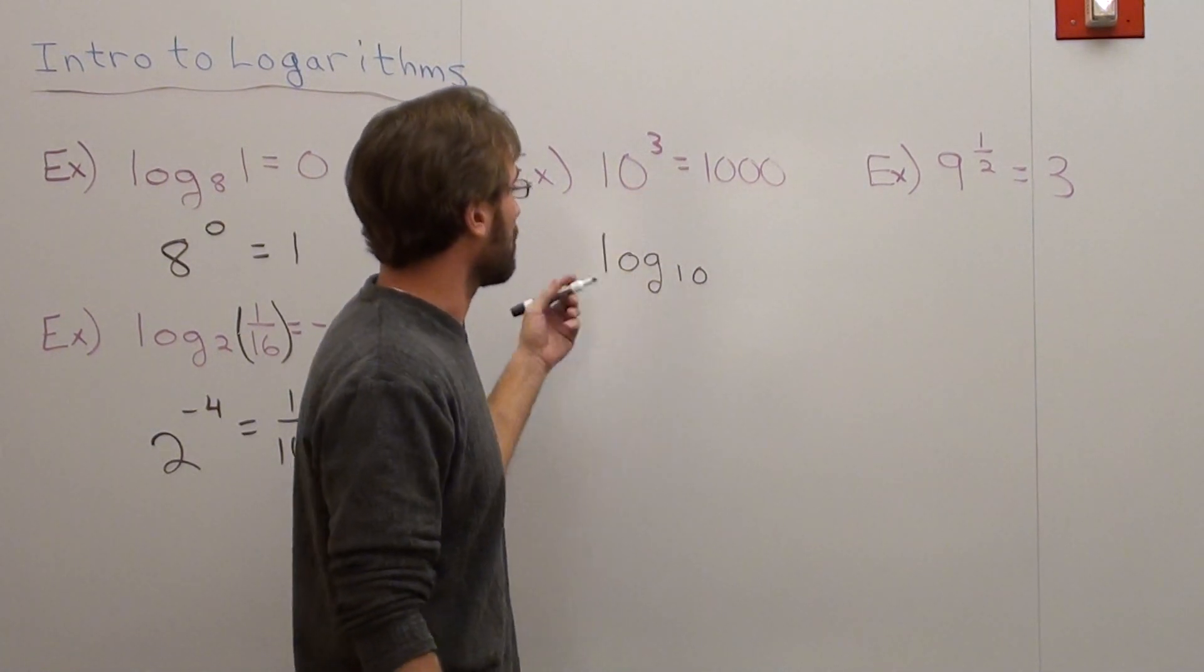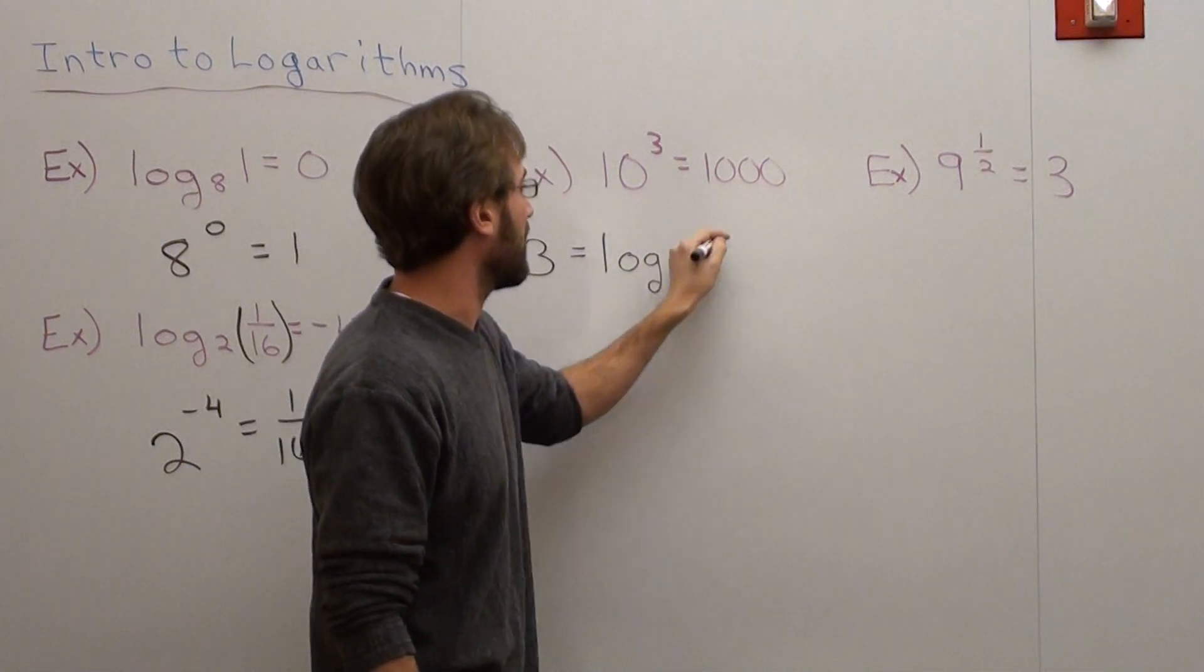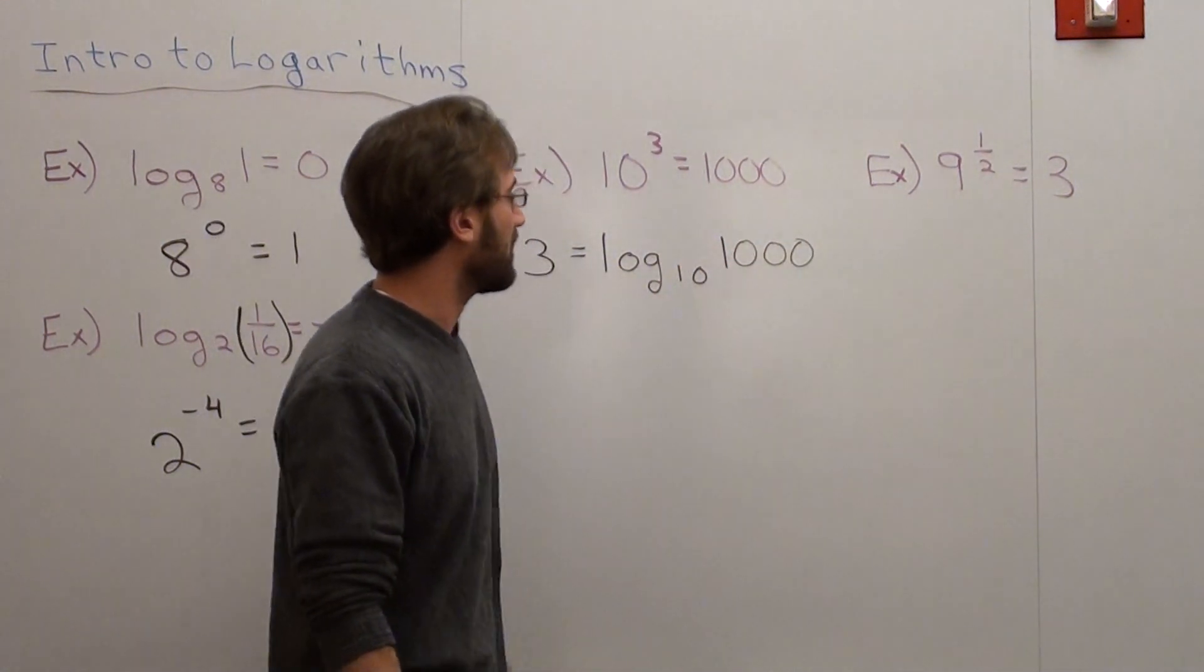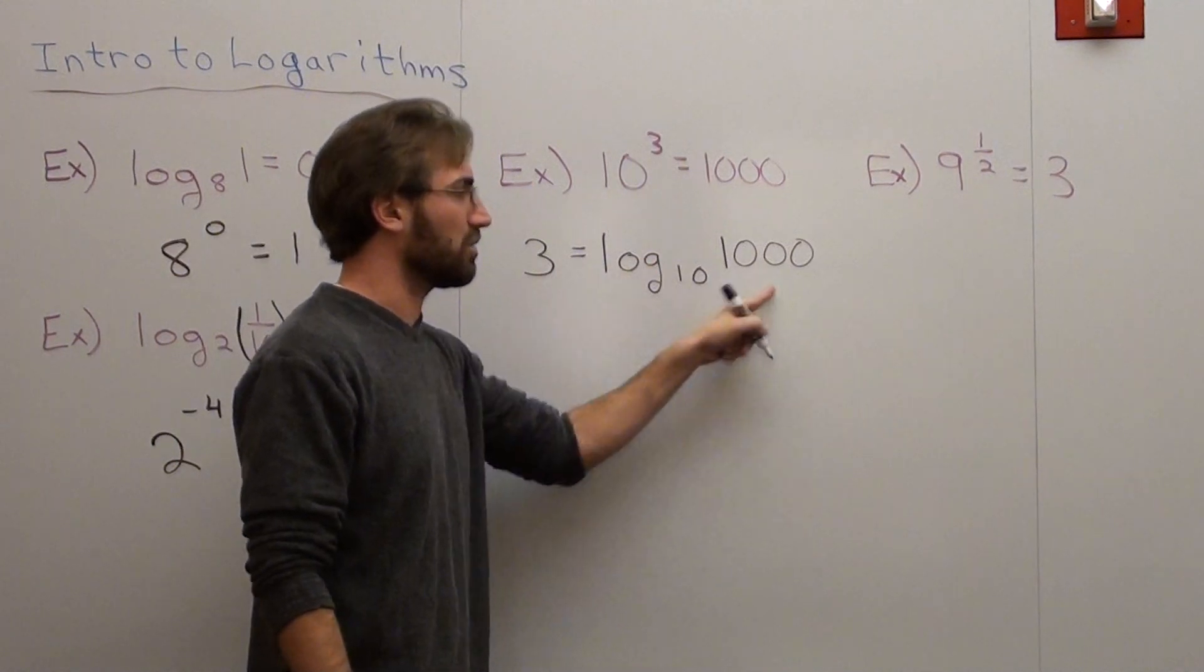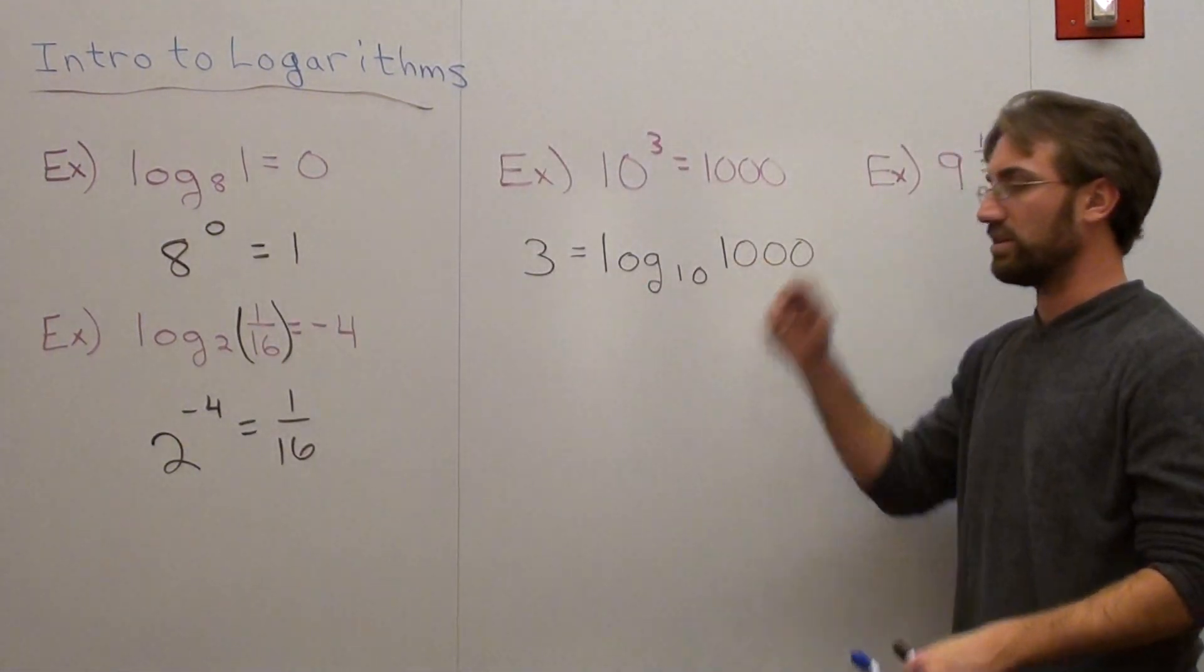The exponent is always what it's equal to, and then it's just log base 10 of 1,000. So 10 to the 3rd equals 1,000. If you don't believe me, go ahead and do exponential form. 10 to the 3rd does equal 1,000.